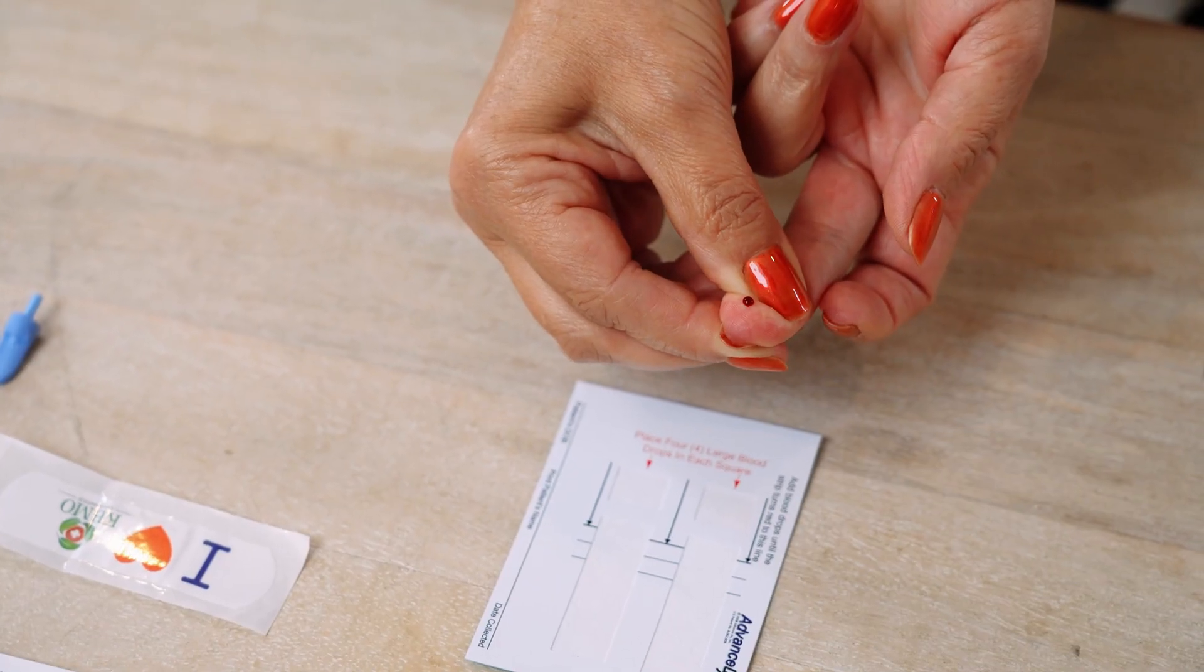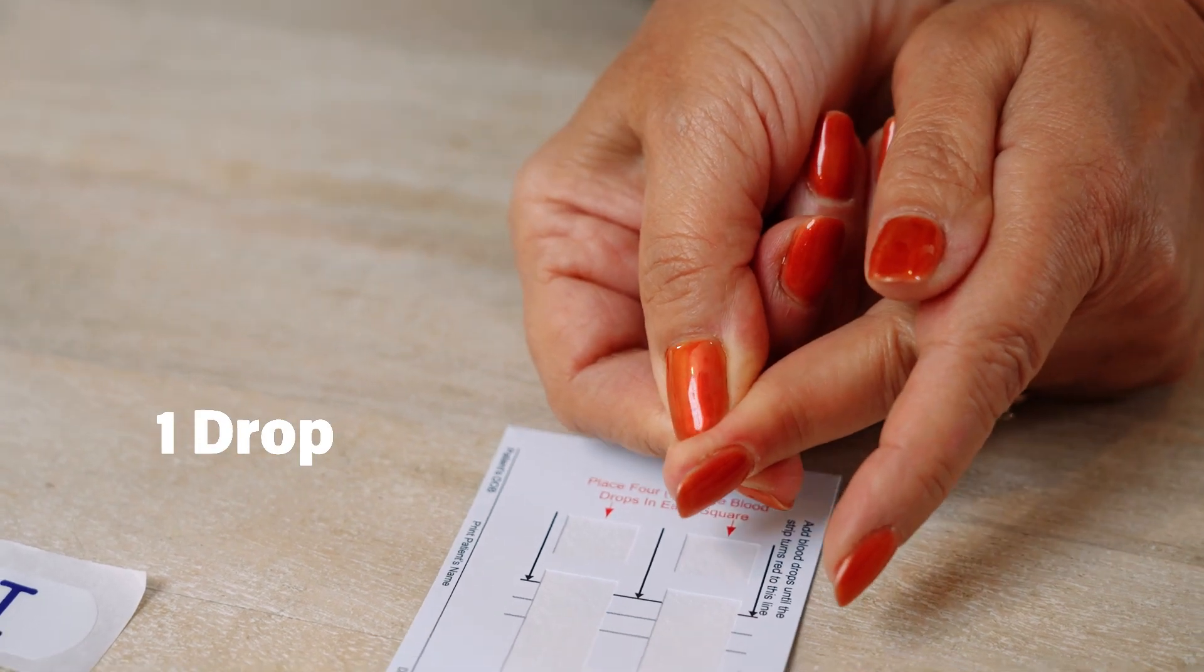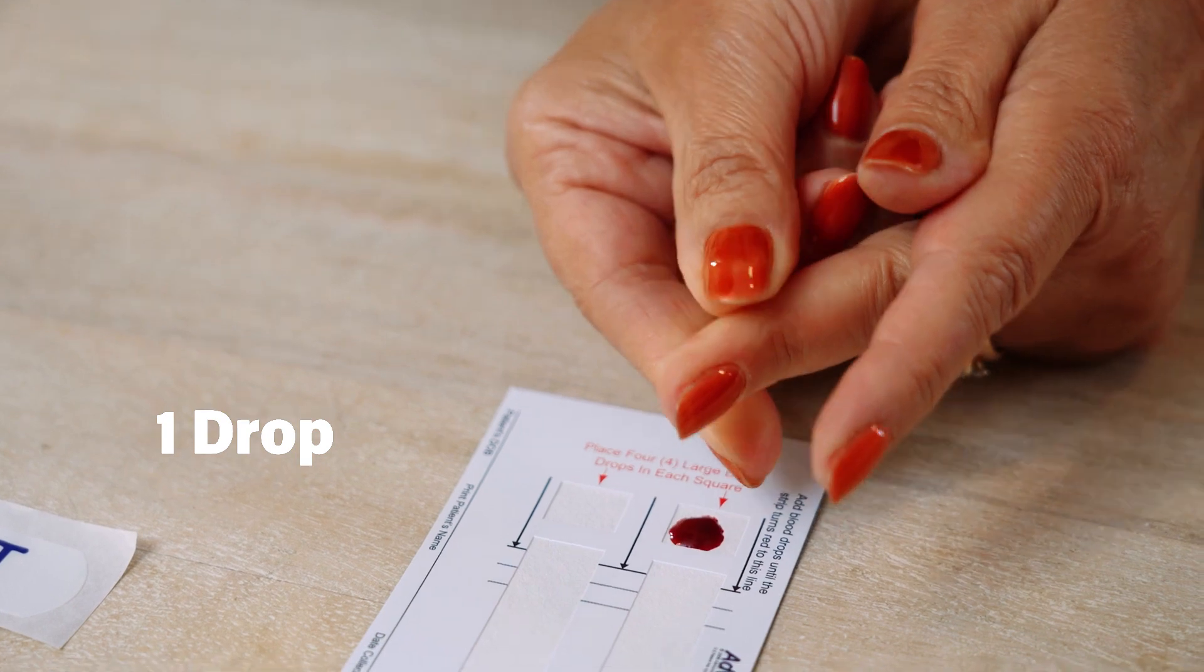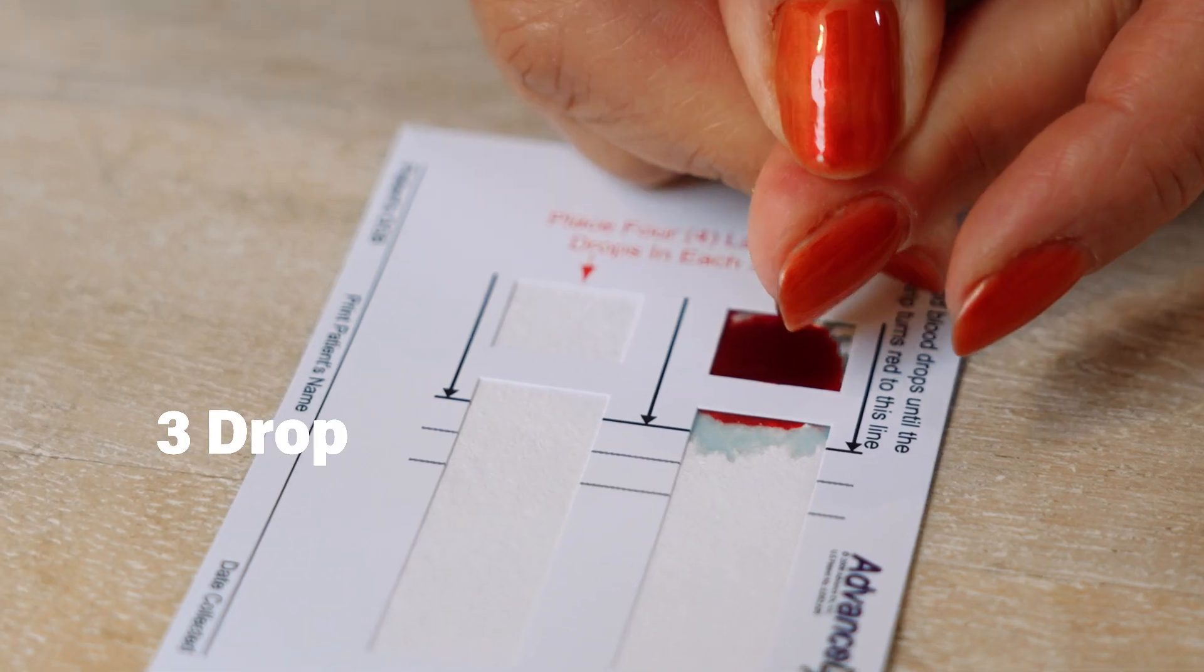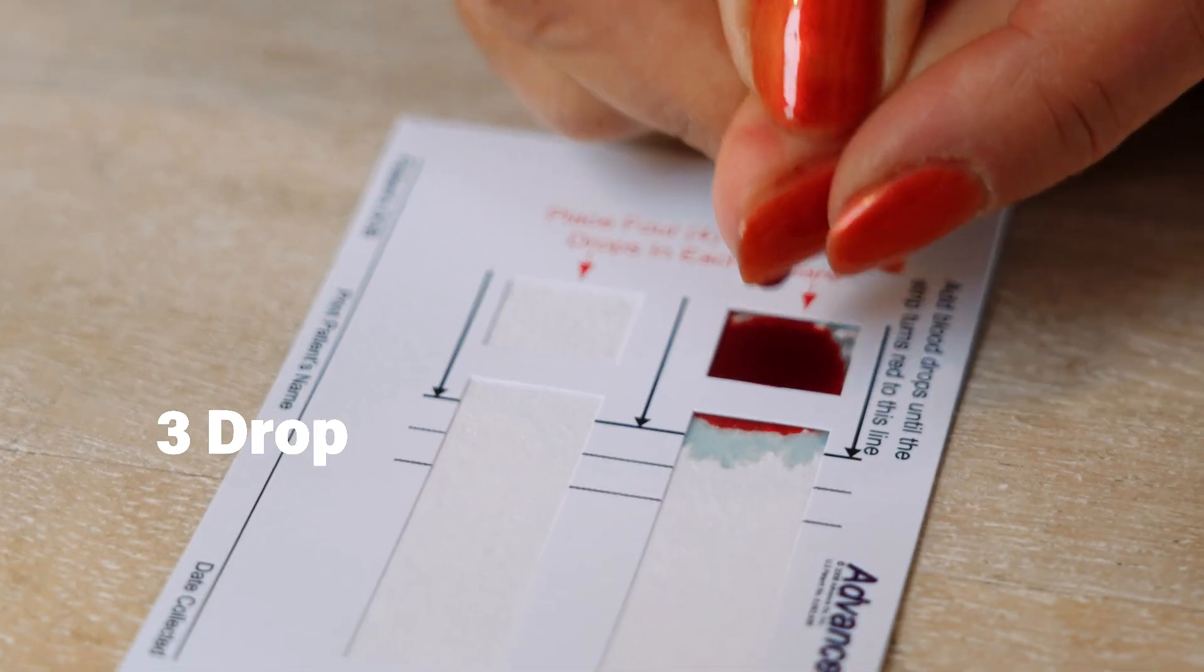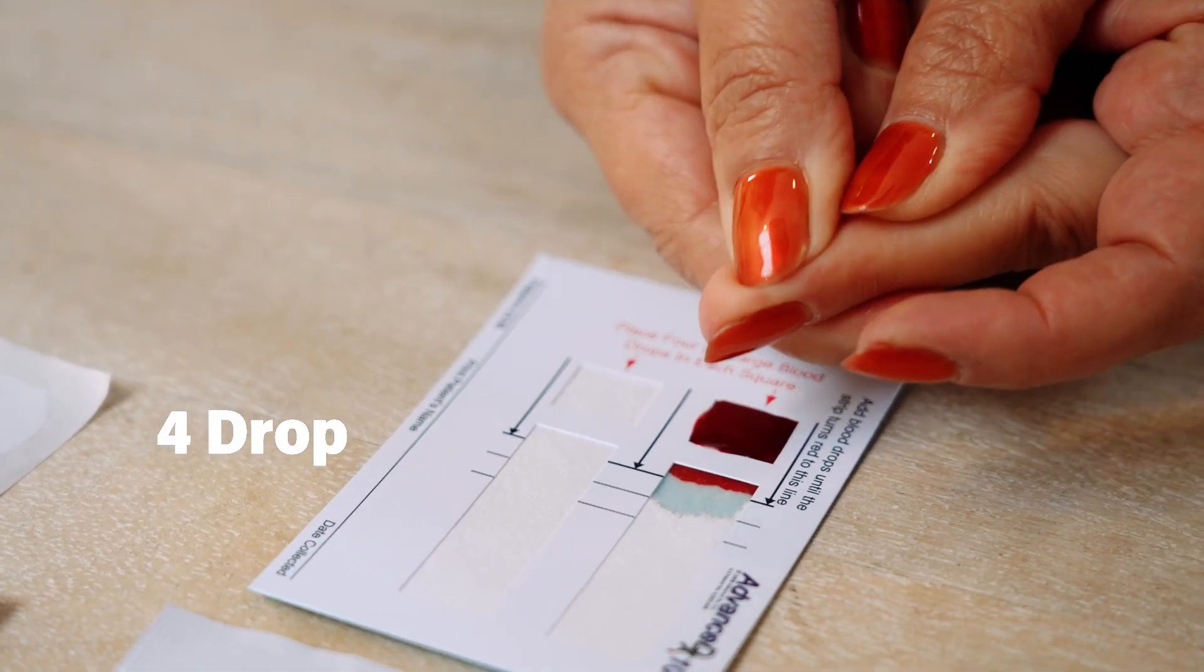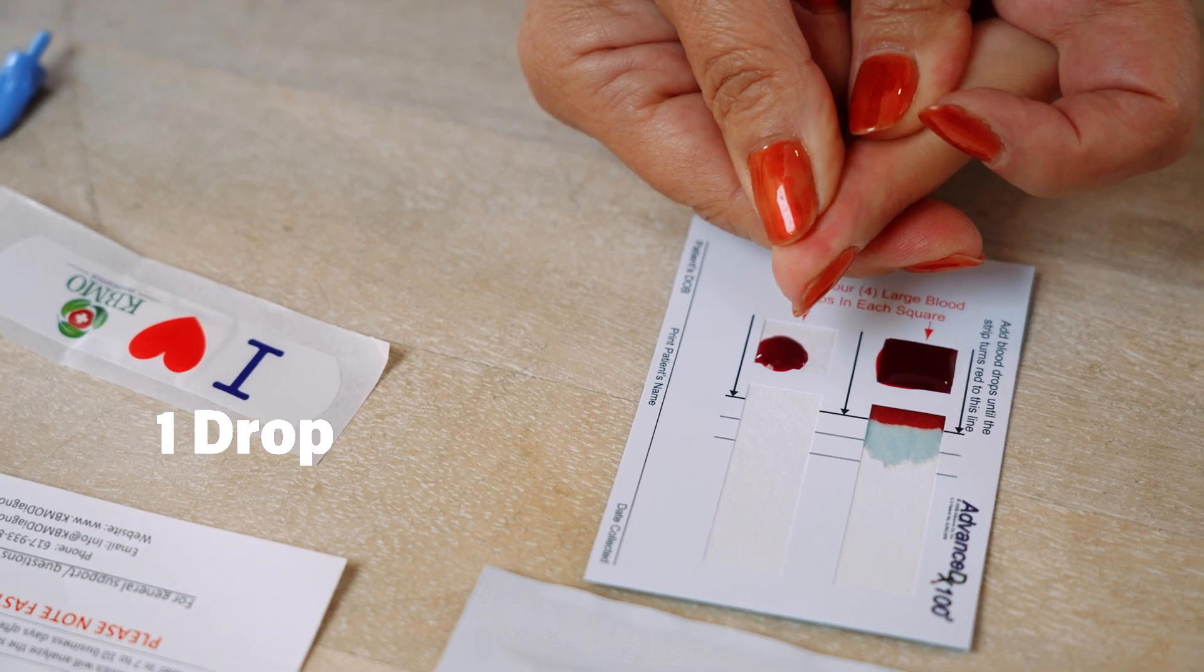Allow 4 to 7 large free-falling blood drops to land on the top left square of the card. Avoid touching your finger directly on the collection square and do not place blood drops directly on the white rectangles on the right side of the card. Blood will migrate from the square to the rectangle.